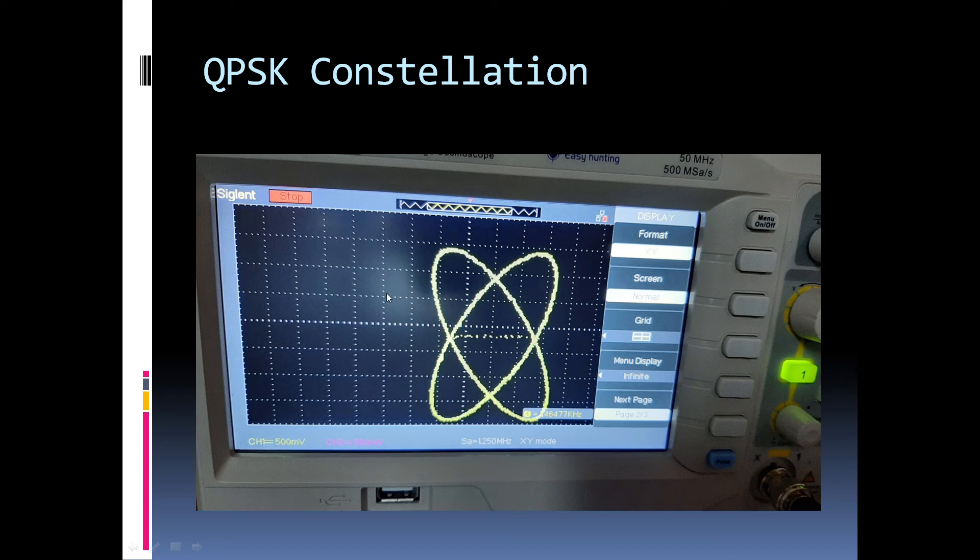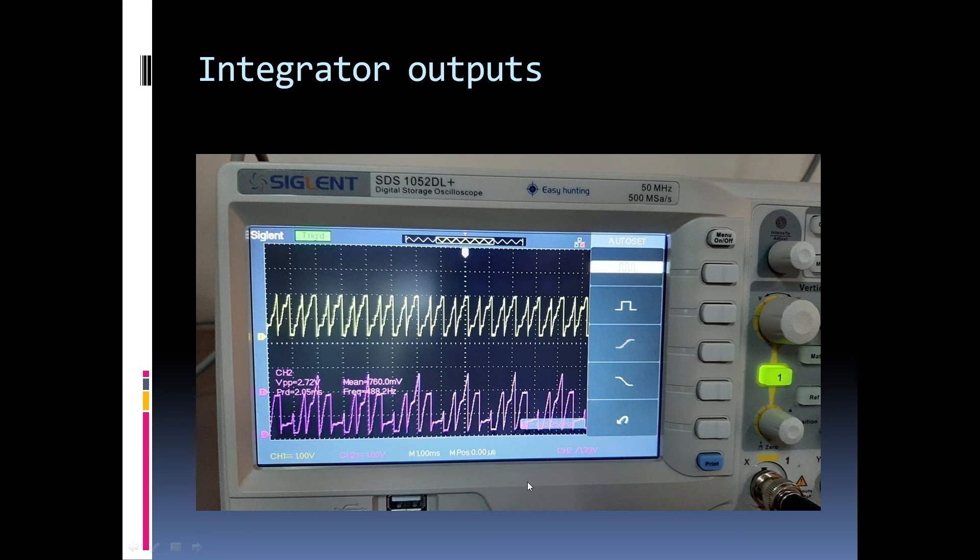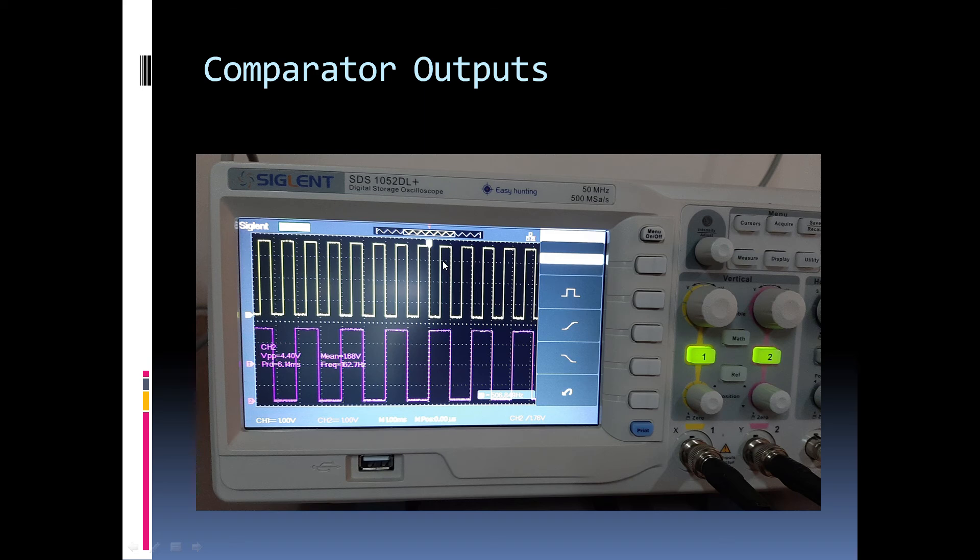And on the demodulation front, if you see the modulated QPSK signal is first given as the input to cosine and sine carrier multiplier that we have. And that separates two BPSK signals. And then each of these BPSK signal is separately given to two different correlator receivers. And the first block in the correlator receiver is the integrator. So, the integrator outputs are shown here. And here we have the output of the comparator which are following the integrator.